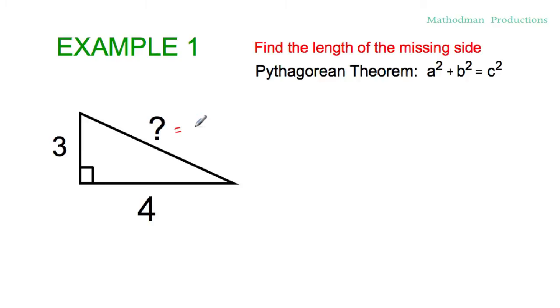so we can label this as c. A and b are the legs that's given to us, three and four, so we're missing one side, that's what we're trying to find out.